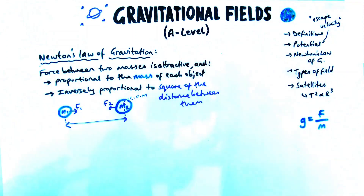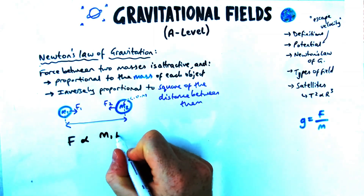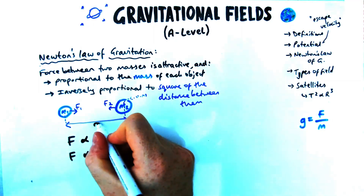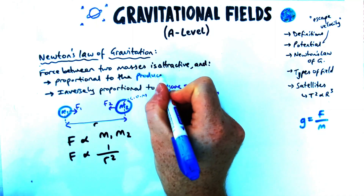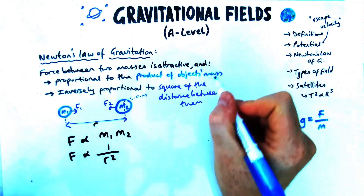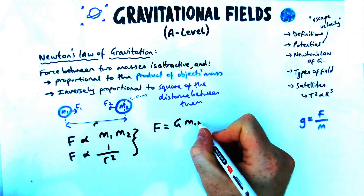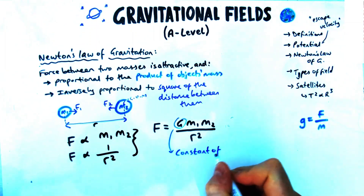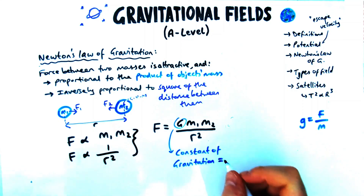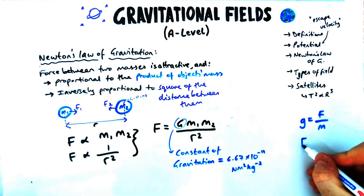In algebraic form, F is proportional to M₁ times M₂ — the product of the masses. Putting those things together we get the equation: F = GM₁M₂ / r². Sometimes you see capital M and lowercase m — it's the same thing. The value G is a constant, measured to be 6.67 × 10⁻¹¹ newton metres squared per kilogram squared. It's pretty small, which indicates that gravitational forces are generally very small.